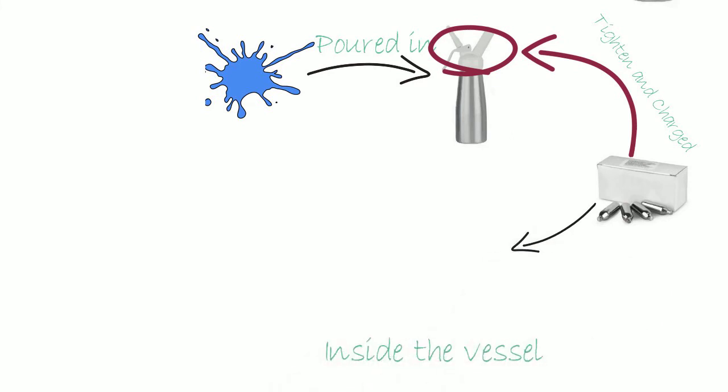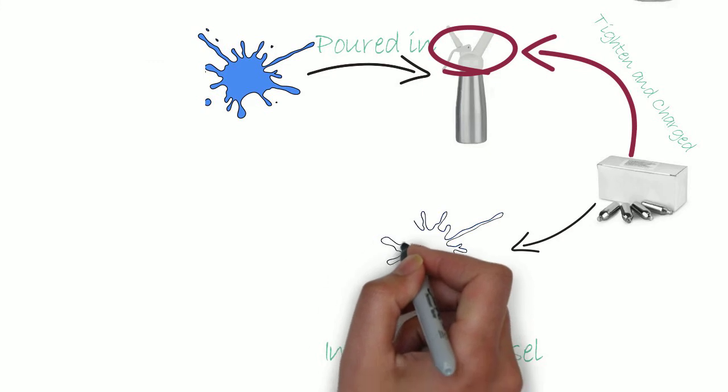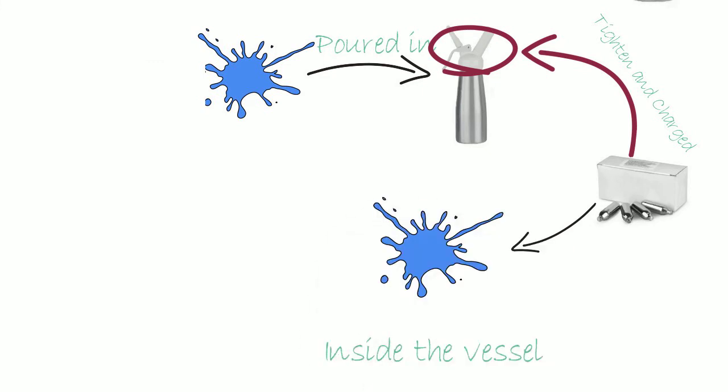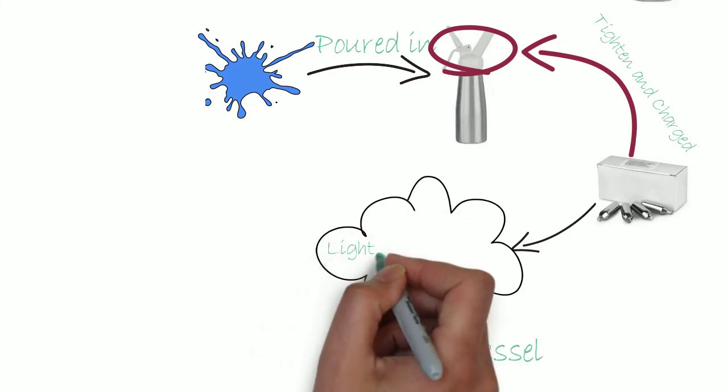This increases the pressure inside the vessel and forces nitrous oxide to dissolve into the liquid. When liquid is dispensed through the nozzle, it suddenly reaches atmospheric pressure and the dissolved bubbles expand, creating light, airy foam.